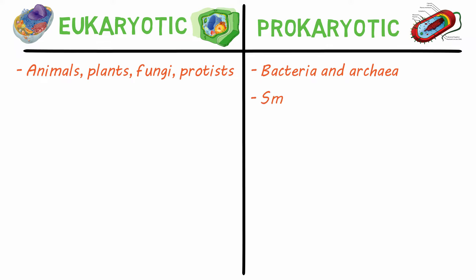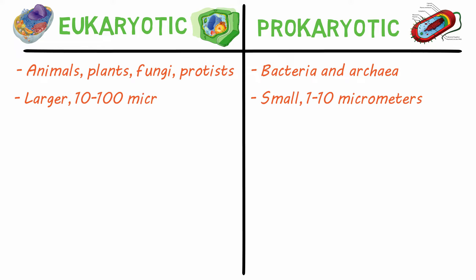Prokaryotic cells are generally small, 1 to 10 micrometers, while eukaryotic cells are larger, 10 to 100 micrometers. And if you're wondering how small a micrometer is, 1 centimeter equals 10,000 micrometers, so they're really small.